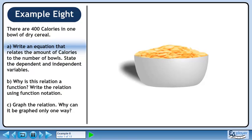There are 400 calories in one bowl of dry cereal. In Part A, we'll write an equation that relates the amount of calories to the number of bowls. State the dependent and independent variables.